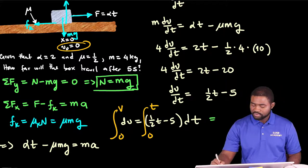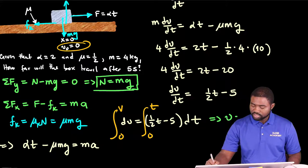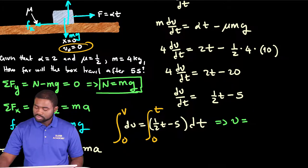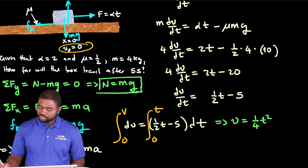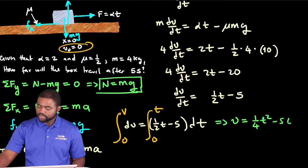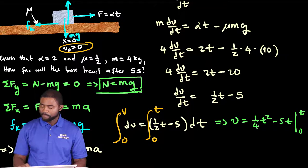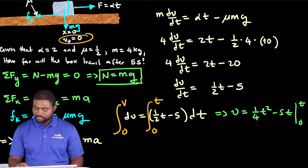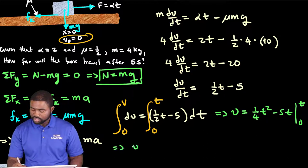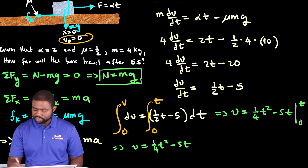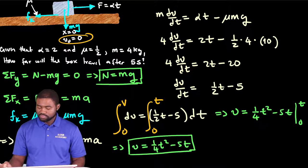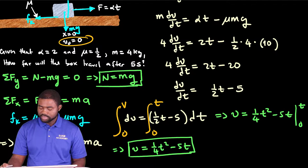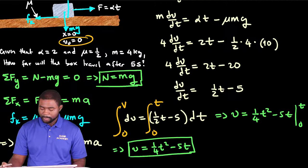If we take the integrals of both sides, we are integrating from the initial velocity of the block which is 0, from 0 to V. And we are integrating from 0 to T. This would mean that V is equal to 1 over 4 T squared minus 5T. This is the expression for the velocity of the box to the right as a function of time.